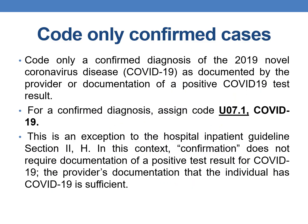Coming to code only confirmed cases: the COVID-19 infection code is U07.1. We must code only a confirmed diagnosis of 2019 novel coronavirus disease, also called COVID-19, as documented by the provider, or documentation of a positive COVID-19 test result. For a confirmed diagnosis, we must assign code U07.1. There is an exception for this rule especially in the case of the hospital inpatient guideline, because in that context confirmation does not require documentation of a positive test result — the provider's documentation that the individual has COVID-19 is sufficient.